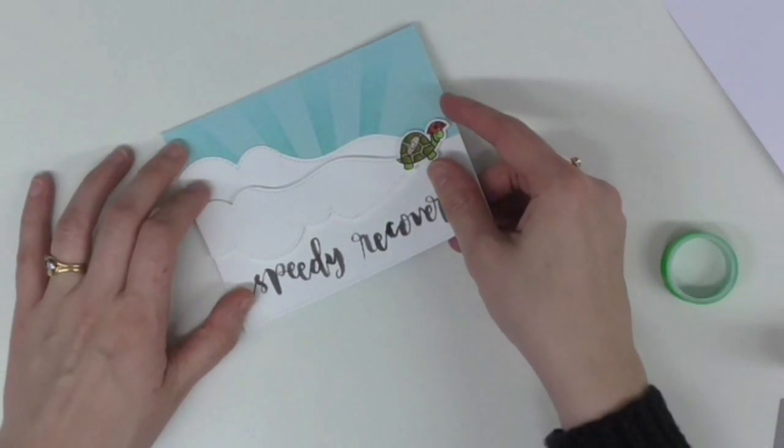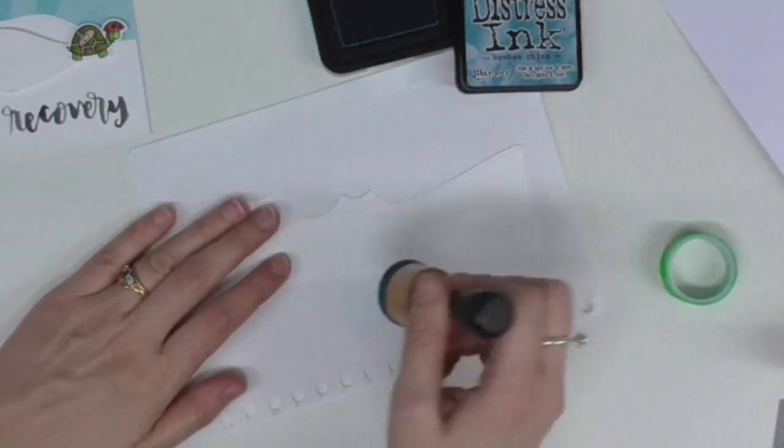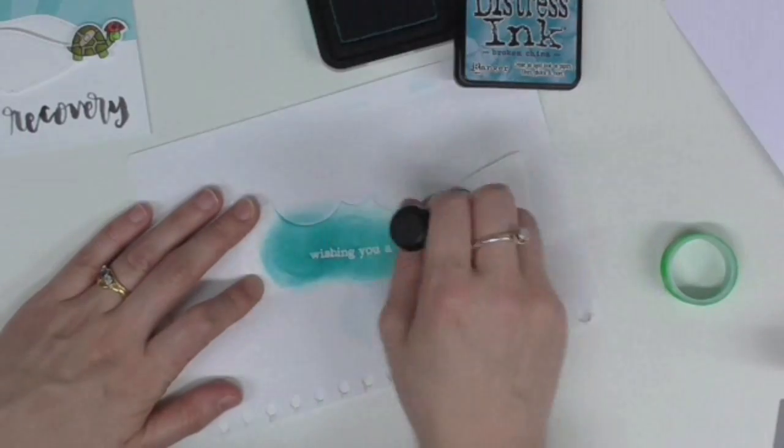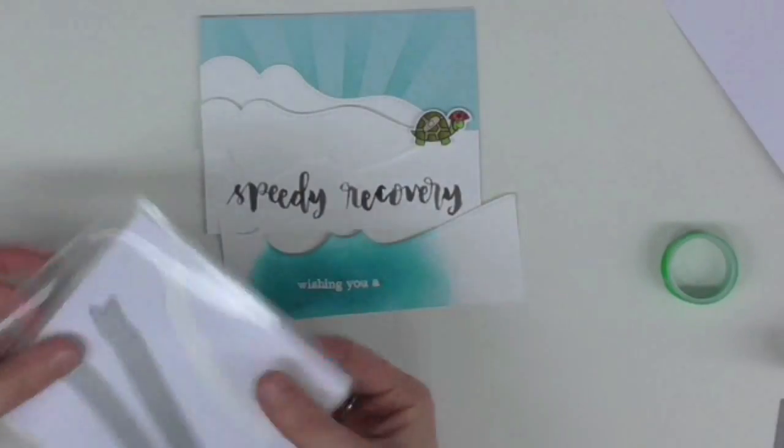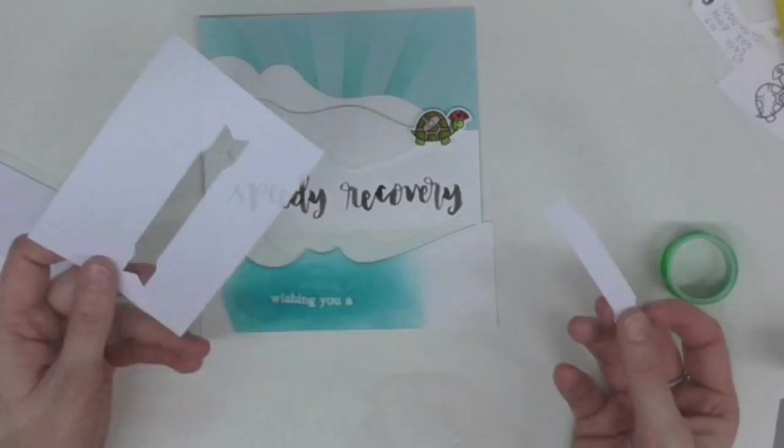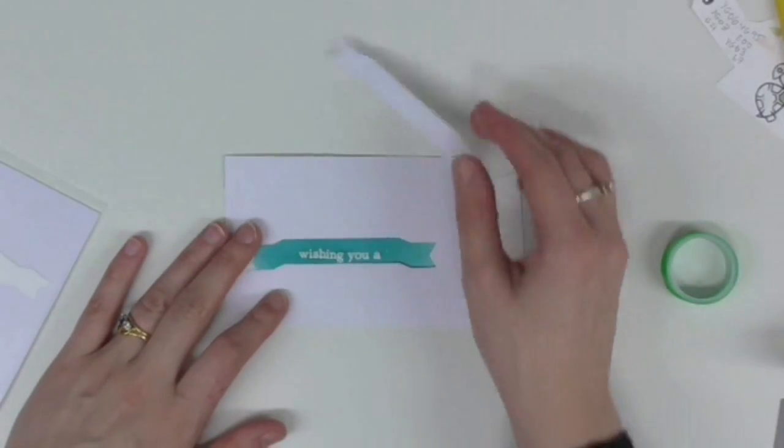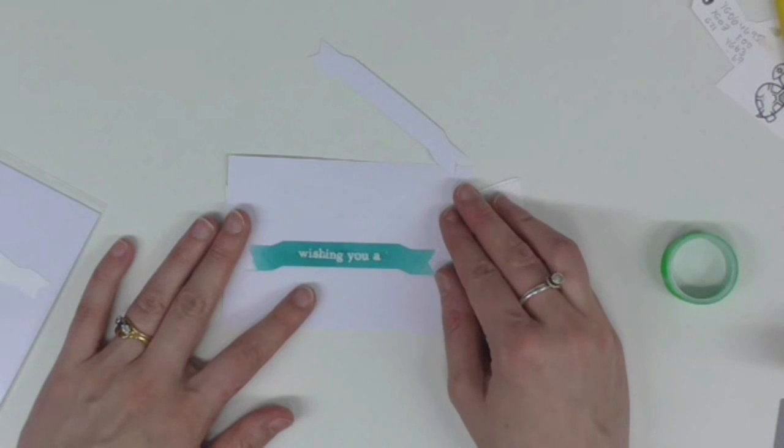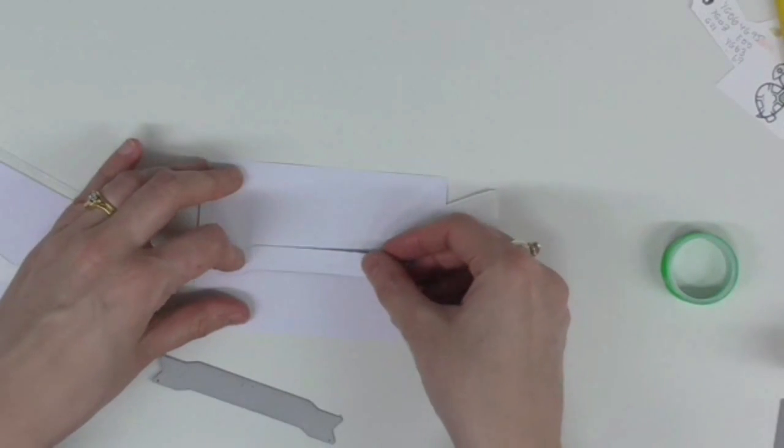So I'm sticking this onto a standard note card. And I'm going to move back to my embossed piece that says Wishing You. Because I used some Broken China Distress Ink on the background of the card, I'm using that again to add some ink to the back of my embossed piece.